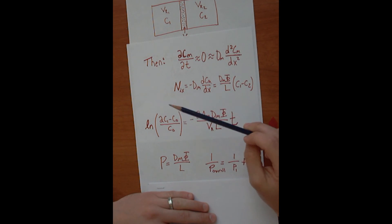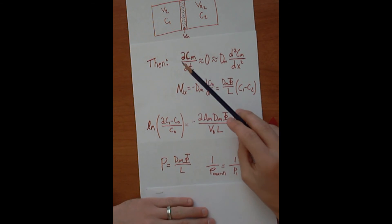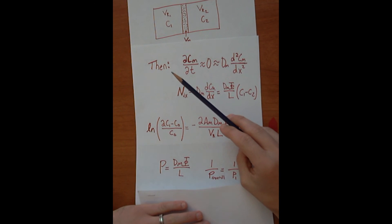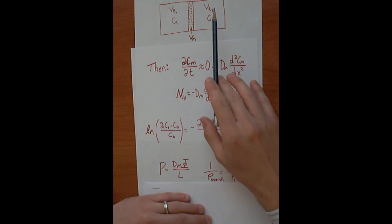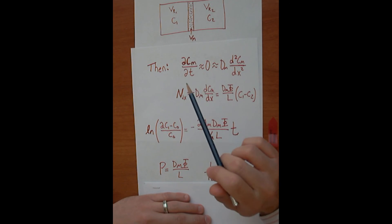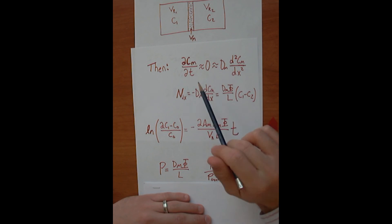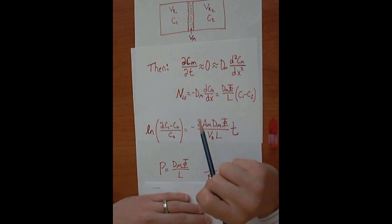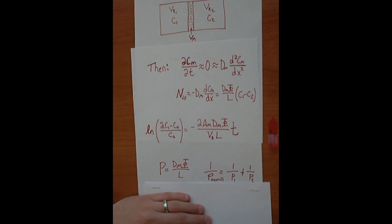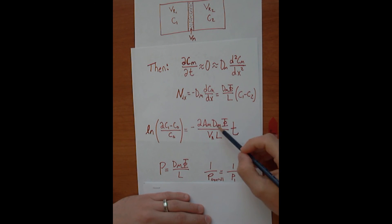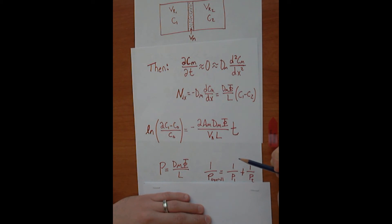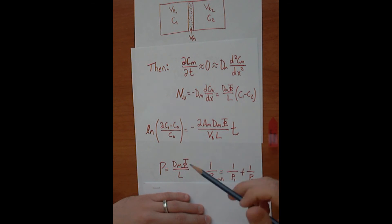So this is one way in which we can consider a situation quasi-steady state and use these simple equations to figure out the flux through the membrane, as well as other important properties such as the diffusion coefficient through the membrane and the permeability of the membrane.